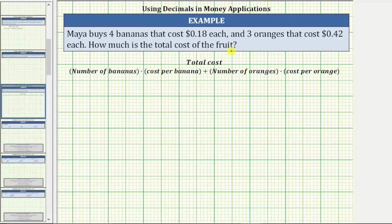The total cost of the fruit is equal to the number of bananas times the cost per banana plus the number of oranges times the cost per orange. Since Maya buys four bananas at 18 cents each and three oranges at 42 cents each, the total cost is equal to four times 0.18 plus three times 0.42.